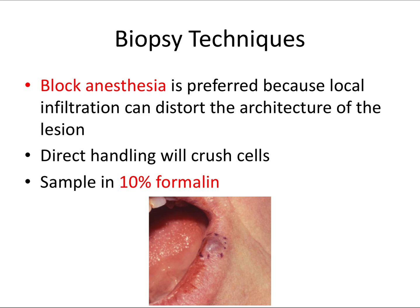There are a couple of biopsy technique considerations. The very first thing you should do is make a differential diagnosis — a list of possible things you think the lesion could be, with number one being the most likely. This informs what kind of biopsy you perform based on the parameters we just went over. Local anesthesia is obviously important, particularly for incisional and excisional biopsies. But first, you want to mark your lesion with an indelible ink marker before you inject any local anesthetic. Whenever possible, block anesthesia is preferred because a local infiltration can distort the architecture of the lesion and potentially complicate your biopsy.